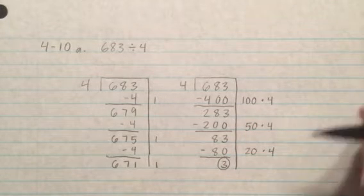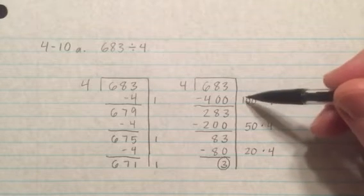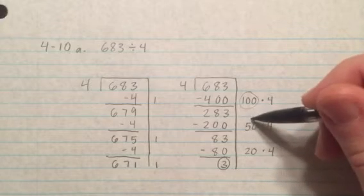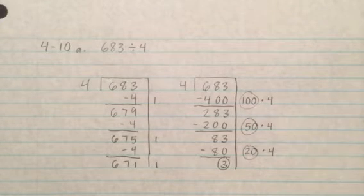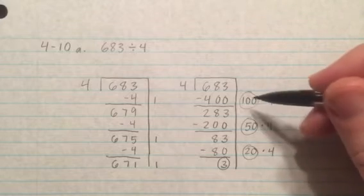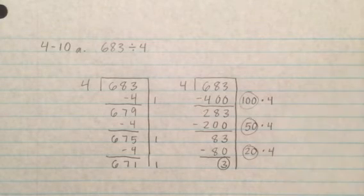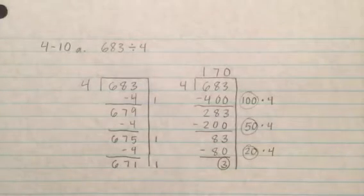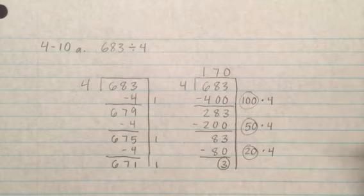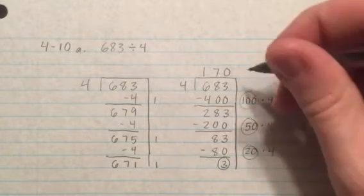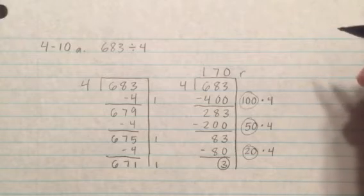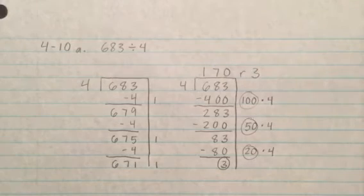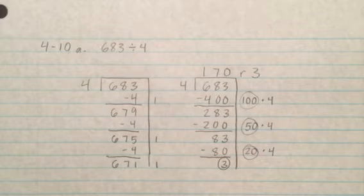So in terms of thinking about the quotient or the answer to this problem, I would say, well, I took off 100 groups of 4 pennies plus 50 groups of 4 pennies plus 20 groups of 4 pennies. So altogether I took off 170 groups of pennies. And I write that number up here. That's my quotient or my answer. I also want to show that there were 3 leftover pennies. And the way that I would do that is write an R, which stands for remainder, in other words, the amount left over, 3, showing that there are 3 pennies left over here.